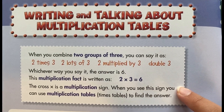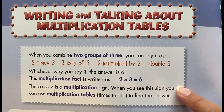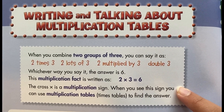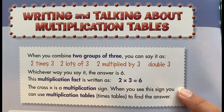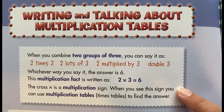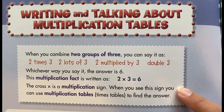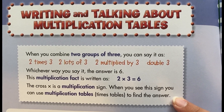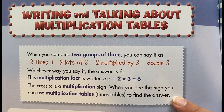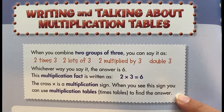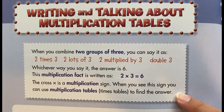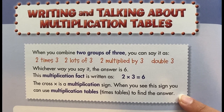Two times three equals six uses a multiplication sign. When you see this sign, you can use multiplication tables, brackets, or times tables to find the answer.